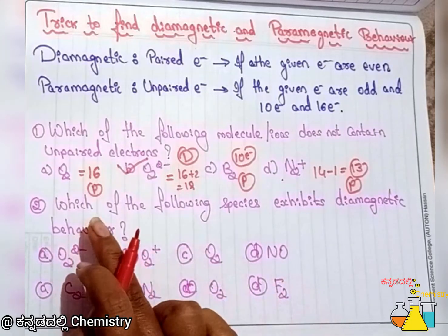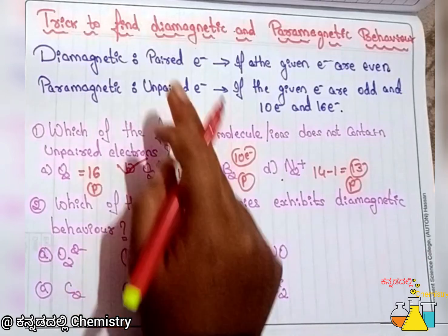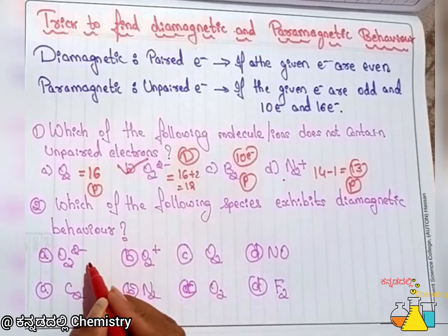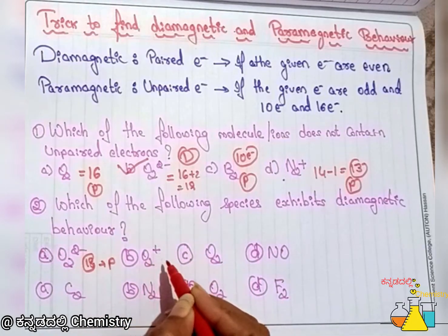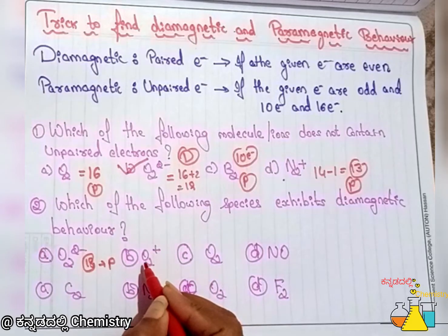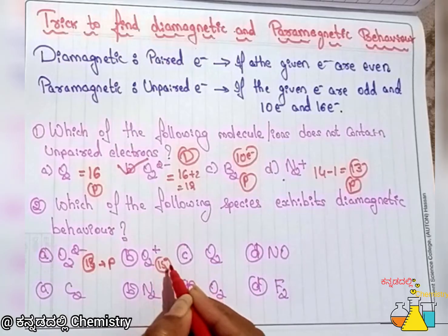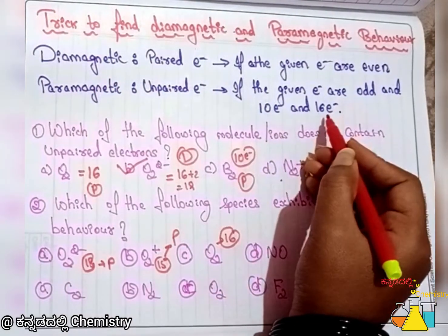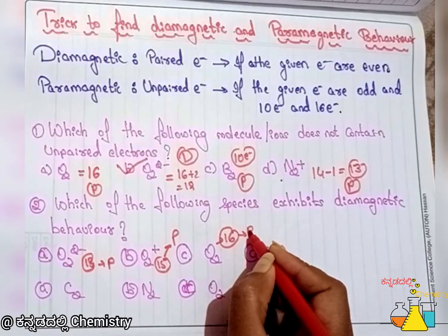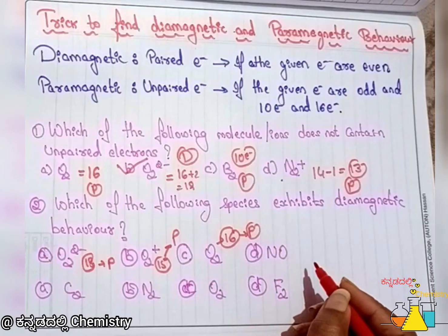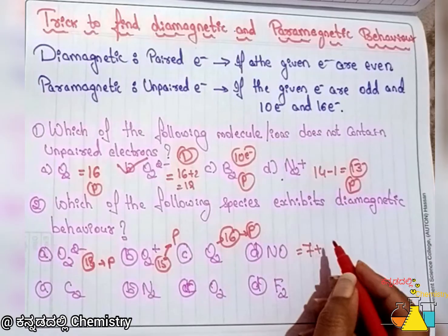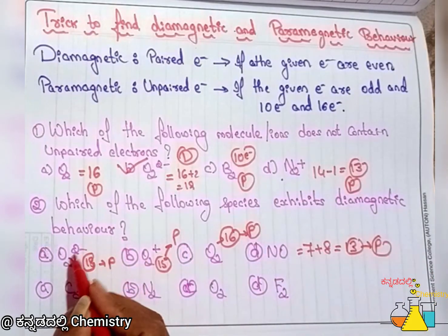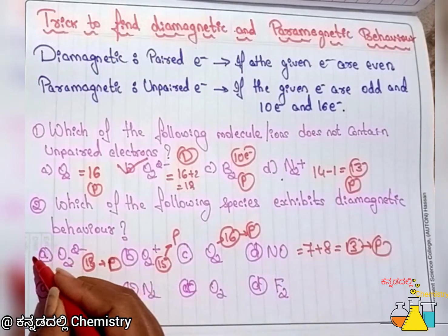Which of the following species exhibits diamagnetic behavior? For O2−: 18 electrons — even number, so diamagnetic. For O2+: 16 minus 1 is 15 electrons — paramagnetic. For O2: 16 electrons — exceptional case, paramagnetic. For NO: nitrogen 7 plus oxygen 8 equals 15 electrons — paramagnetic. So O2²⁻ with 18 electrons is diamagnetic. Option A is the right answer.